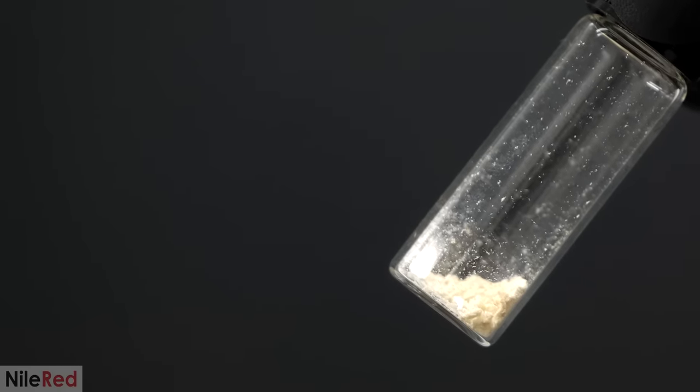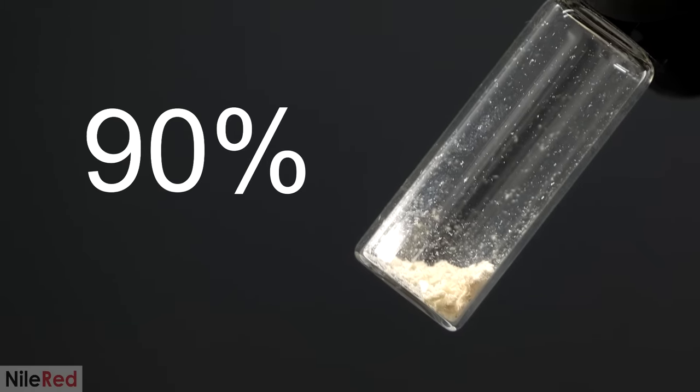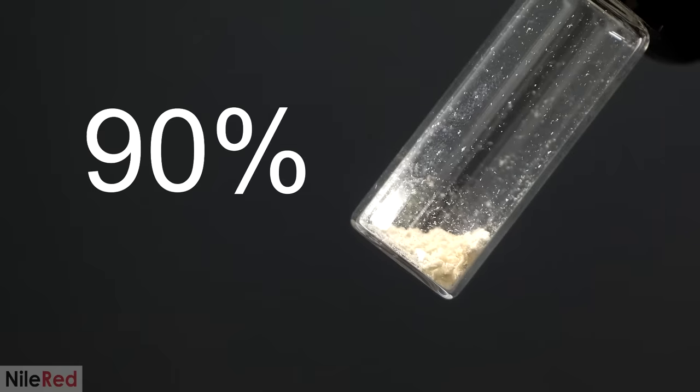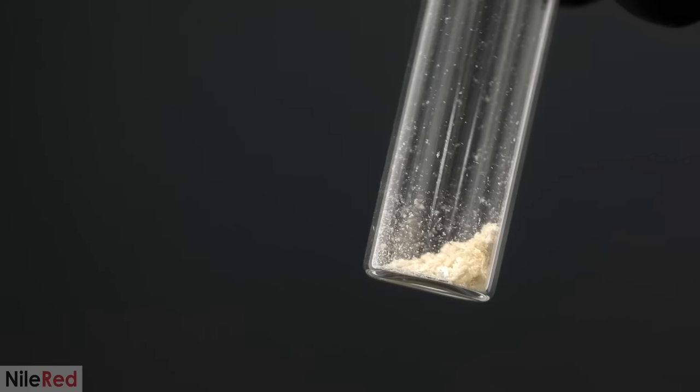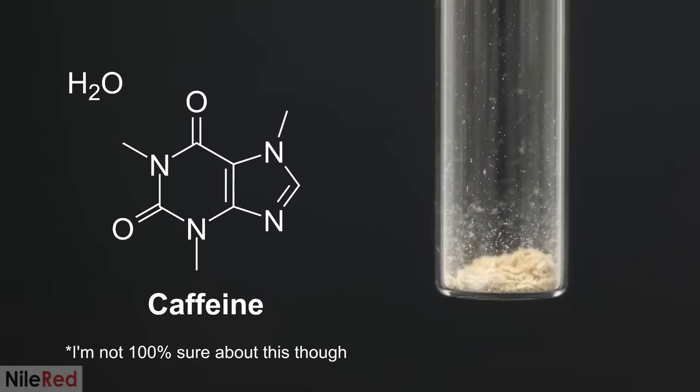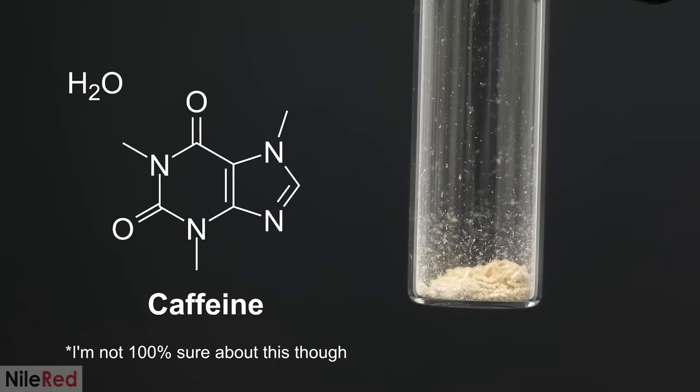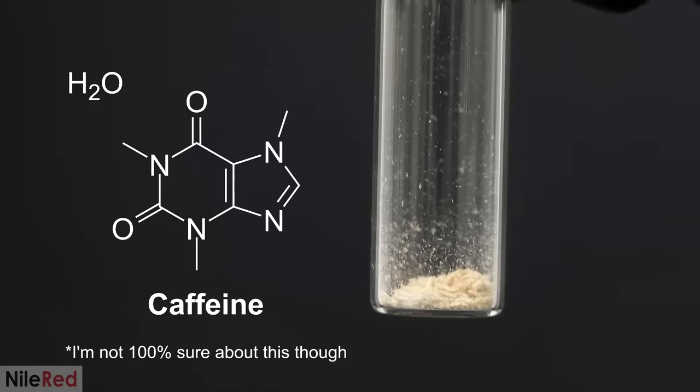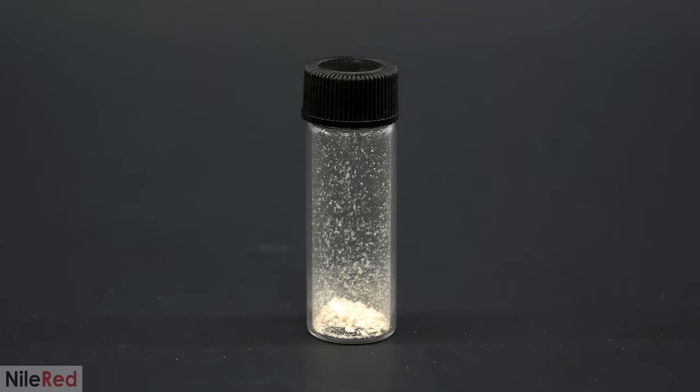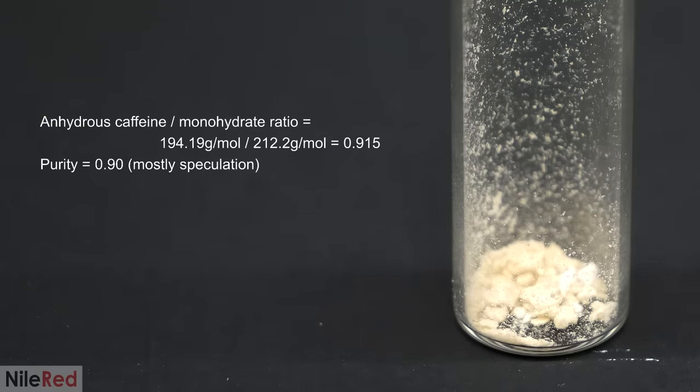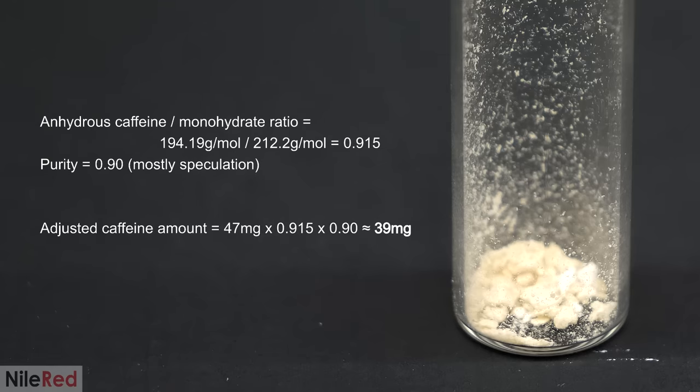However, it wasn't completely pure, and I felt that saying it was around 90% pure was probably a decent estimate. I think the caffeine that I had here was also in the hydrated form, which meant that each caffeine molecule was associated with a water. This would increase its weight a bit, and I felt that it was a good idea to adjust for that as well. So between that and the purity, I felt that I probably had more like 39mg of caffeine. This meant that I had taken out even less than I originally thought, and the Red Bull was probably more like 24% reduced.